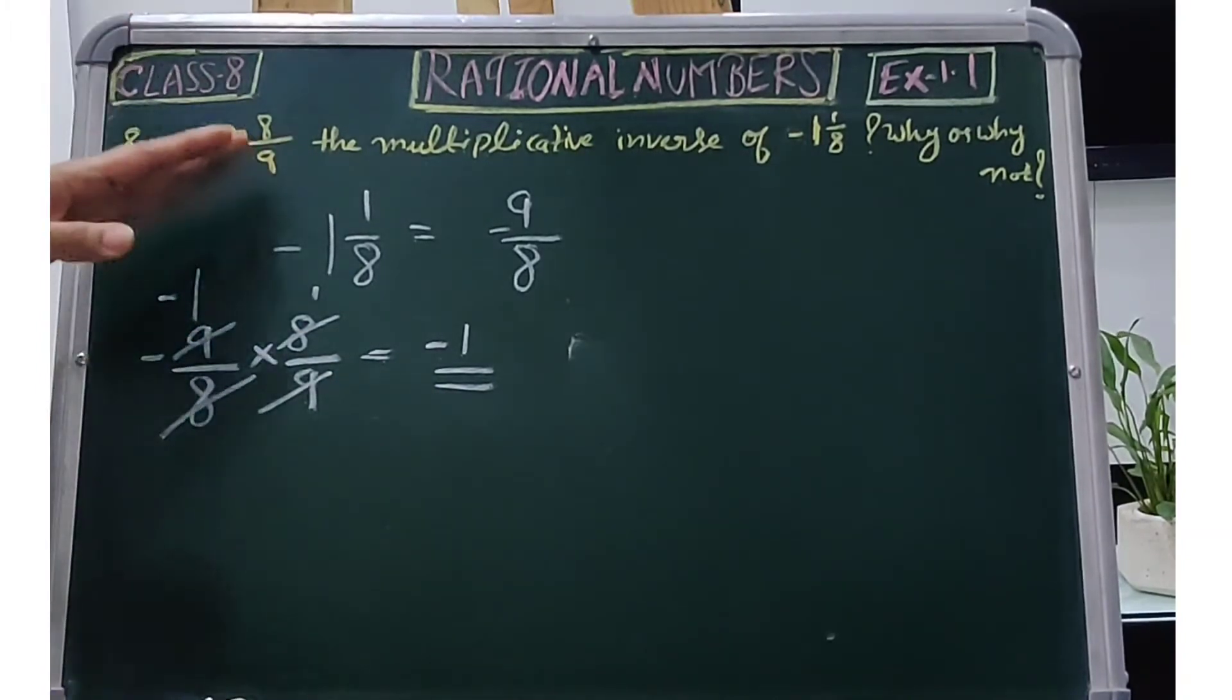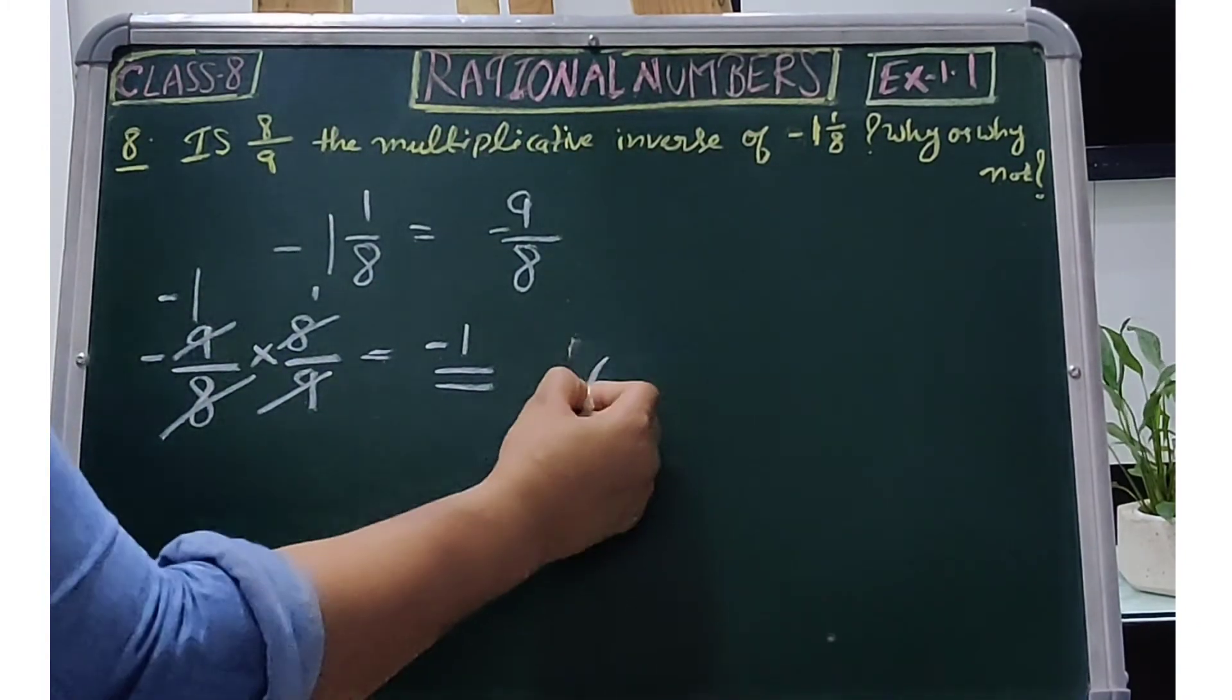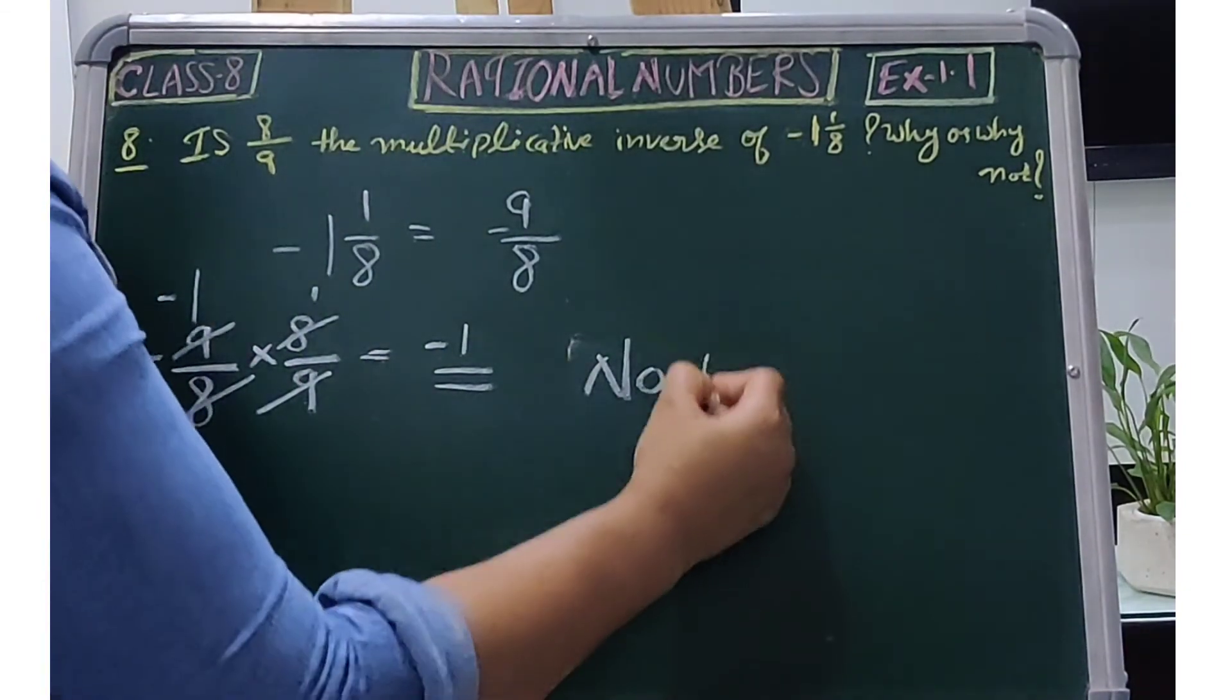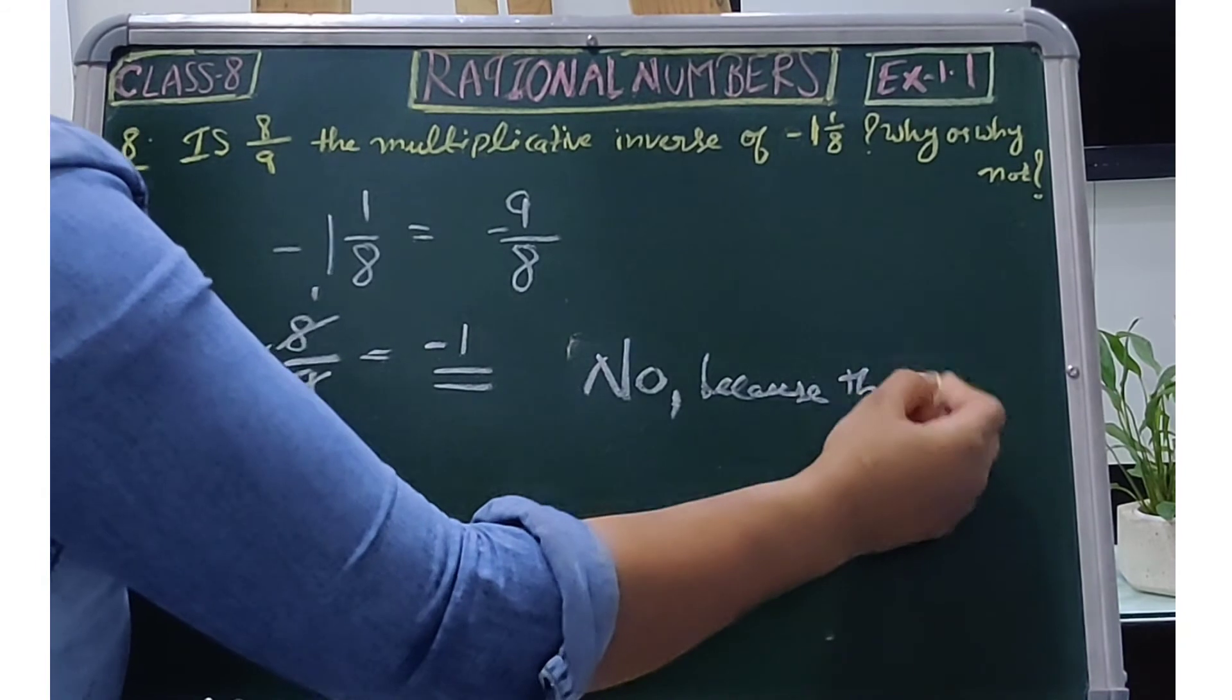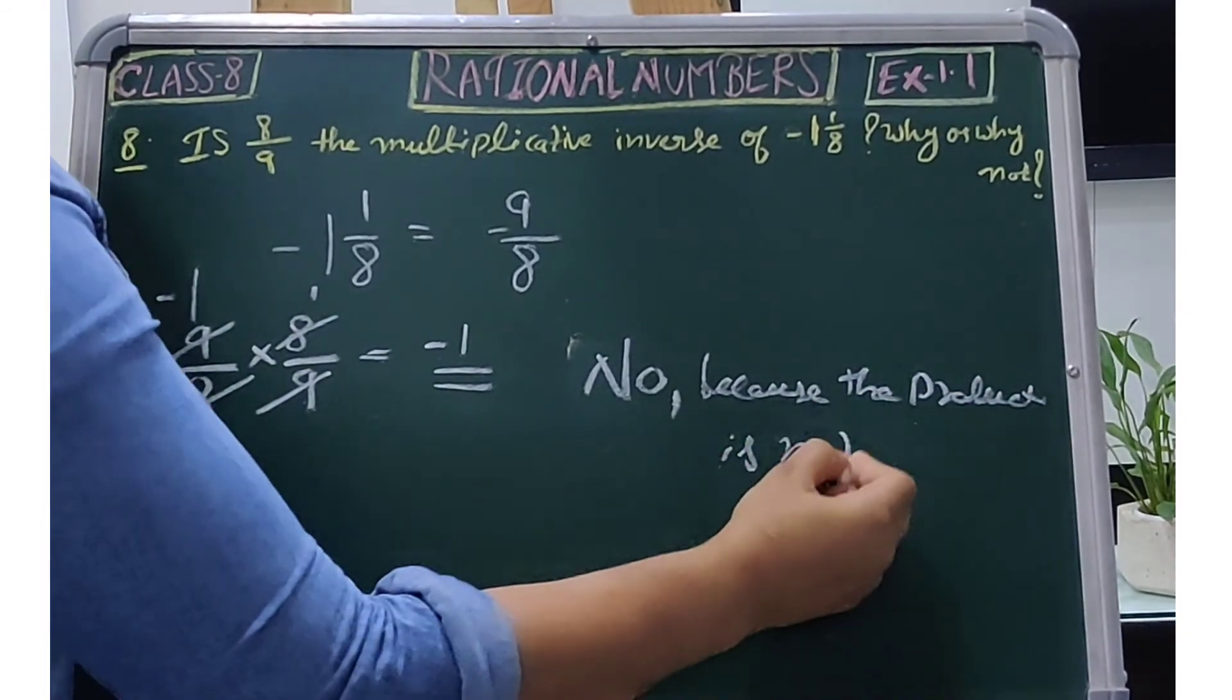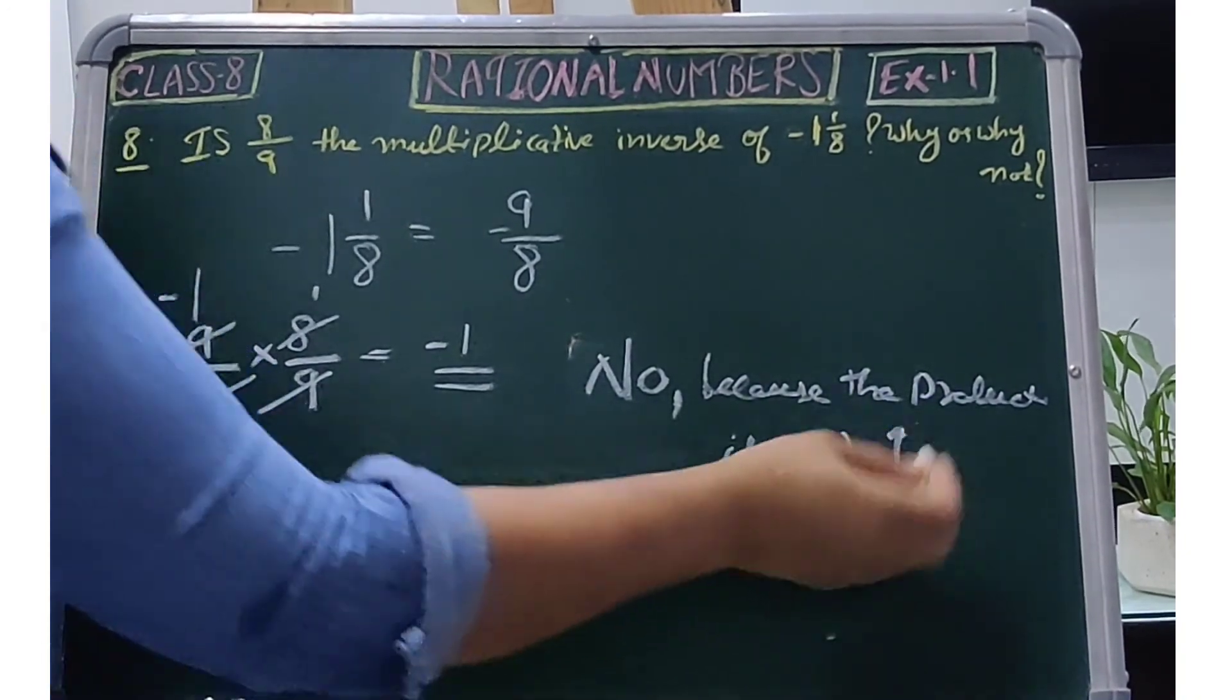If the product is not 1, then 8/9 is not the multiplicative inverse of this number. Why not? Because the product is not 1.